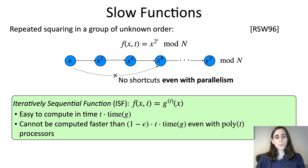This is an example of what we call an iteratively sequential function. This is a function f which is composed by iterating some smaller function g. The properties of an iteratively sequential function is that it's easy to compute in time t, or in t steps of g, but you can't compute it in time 1 minus epsilon times t. And this is true even with many parallel processors.